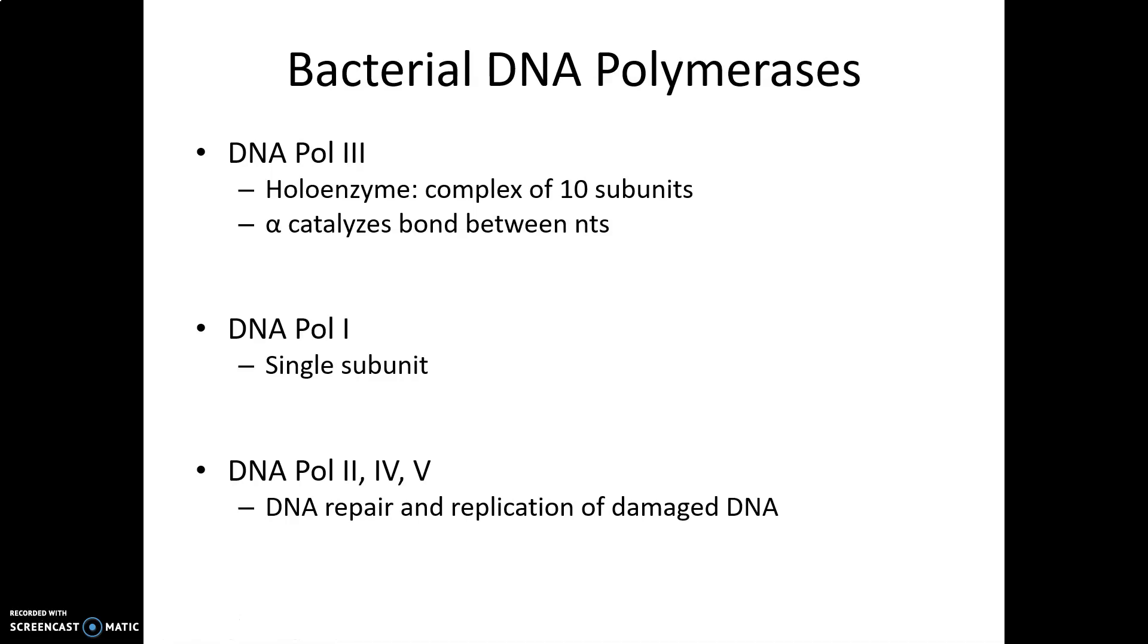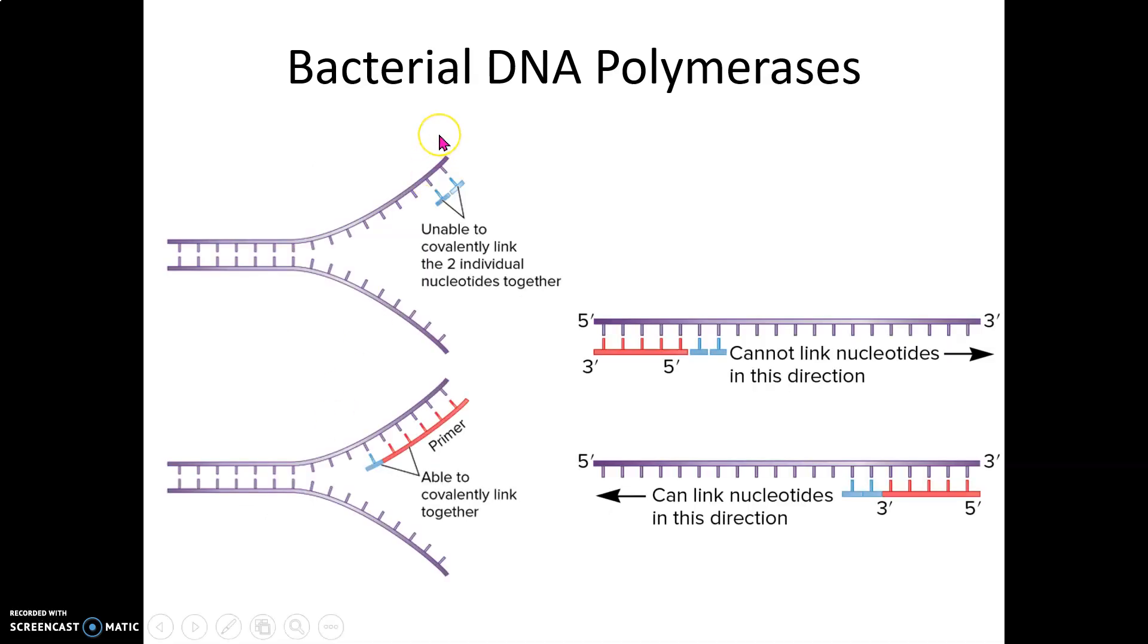There are unusual characteristics about DNA polymerase. First, it cannot covalently link two individual nucleotides, therefore it can't start the process. This is why primase comes in and lays an RNA primer—it has to prime replication and prepare it for DNA polymerase.